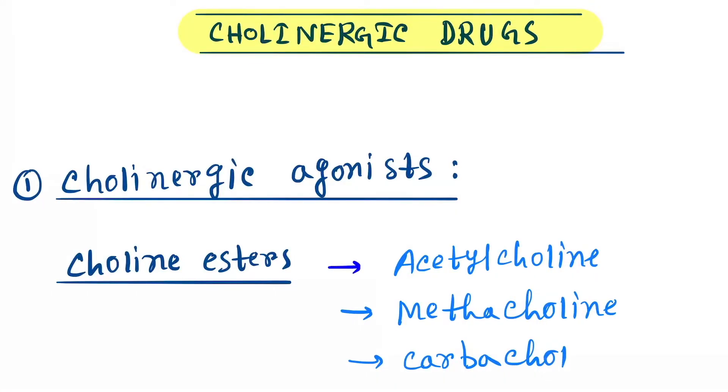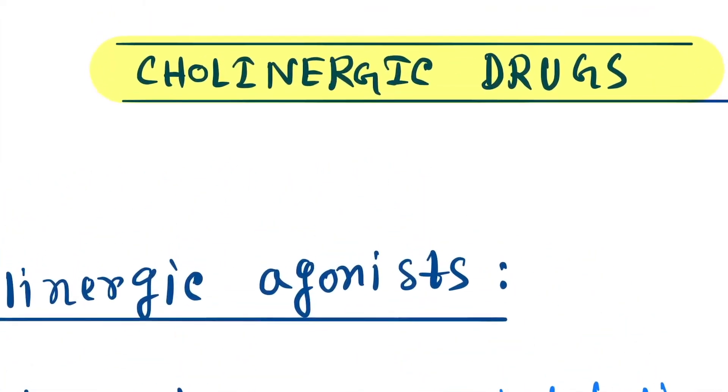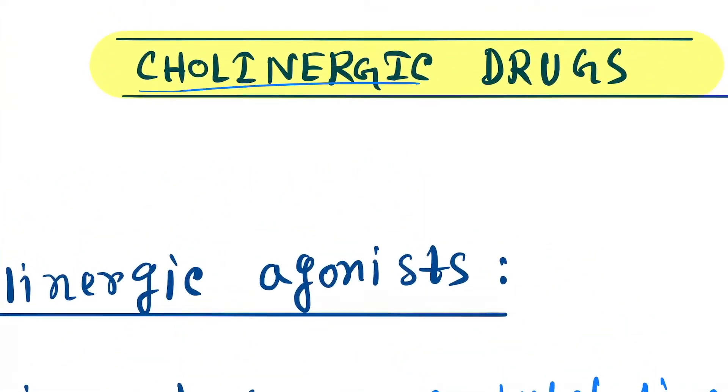Hello friends, today our topic is cholinergic drugs. So let us learn what cholinergic drugs are. Cholinergic drugs are the drugs that inhibit, enhance, or mimic the action of the neurotransmitter acetylcholine.